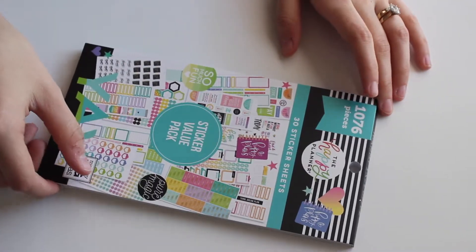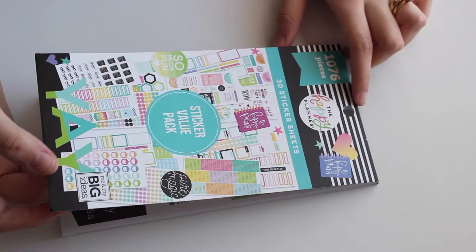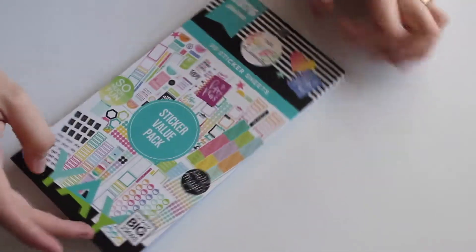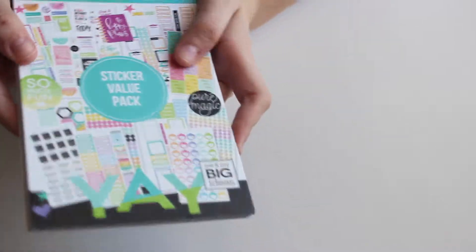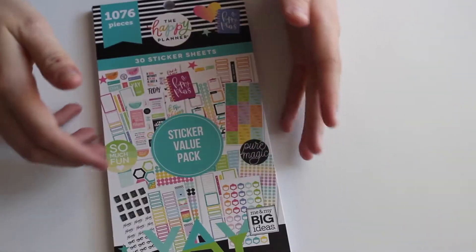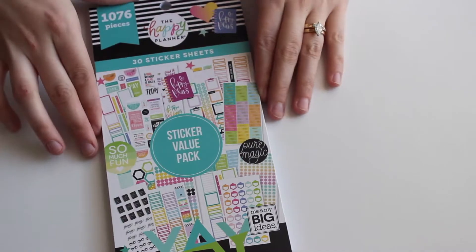So the sticker book has 1,076 pieces in it. The one thing I don't like about this book is that it doesn't have a band. I prefer to have the bands on my books.